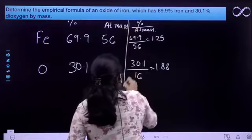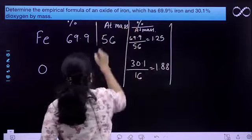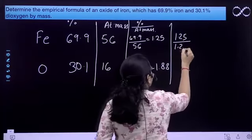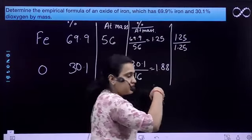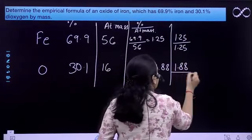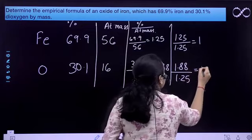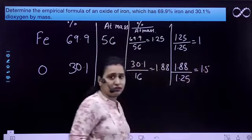The next part, what we will do is, we will divide this 1.25 by 1.25 since it is the least one among these two. And then, 1.88 by 1.25. It will come out to be 1 and it will be approximately 1.5.